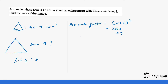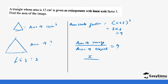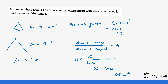Remember how we calculate the area scale factor: we take the area of the image over the area of the object, which equals 9. We have the area of the object but not the area of the image, so we give the area of the image x. So x over 12 cm² equals 9. We multiply both sides by 12, which gives us x equals 9 times 12, giving us 108 cm². This is the area of the image.